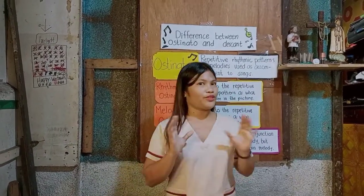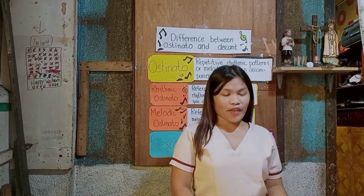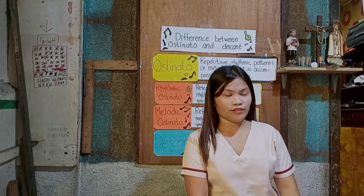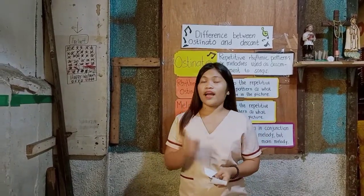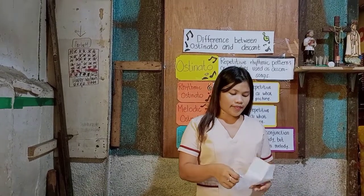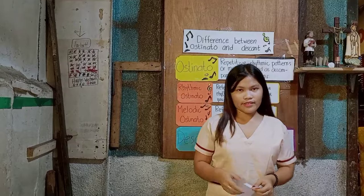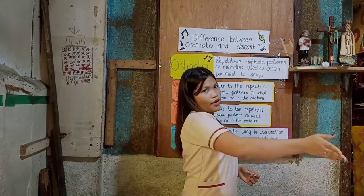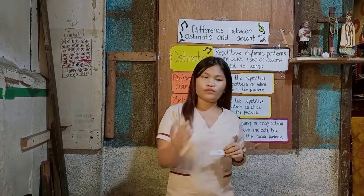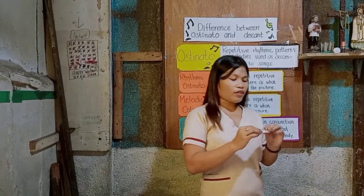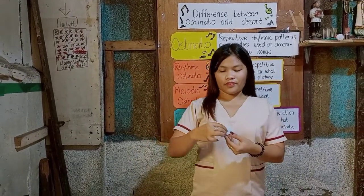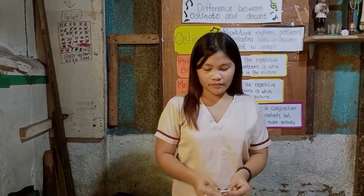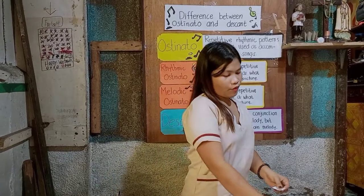Since you have understood today's topic, your activity will be a jumbled letters exercise where you will arrange the letters to form the correct word. Since there are five words, we will divide into groups: group one, group two, group three, group four, and group five. Each group will have one word to unscramble. You may now start arranging the words.